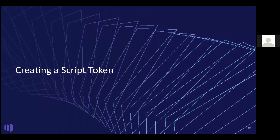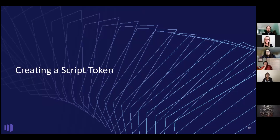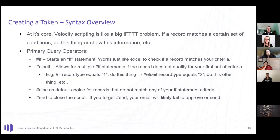So — creating a script token. At its very core, Velocity is just a giant 'if this then that' problem. If a record matches a certain set of criteria or conditions, do a thing or show a thing. The primary query operators: you use a hash mark at the beginning of every line. An '#if' starts an if statement — works just like an Excel IF statement. Then '#elseif' allows multiple if statements, and you can have as many as you need.